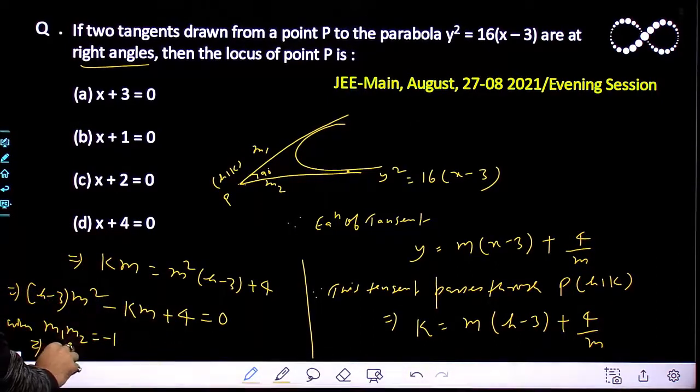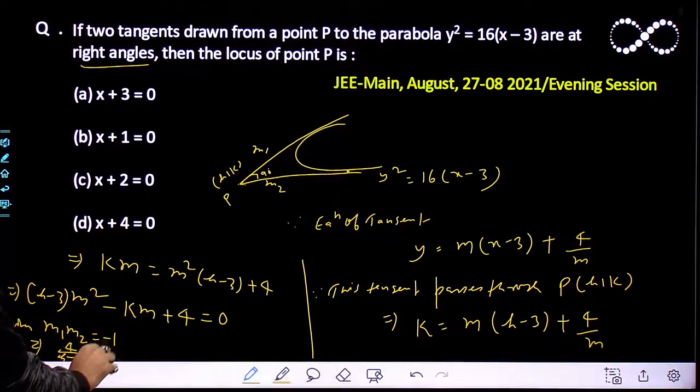From here, what will happen? 4/(h - 3) = -1.